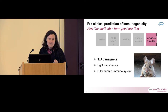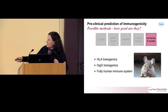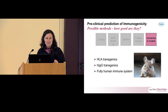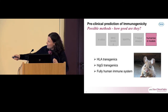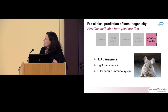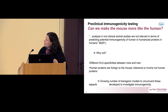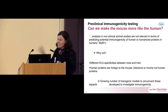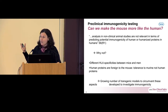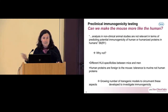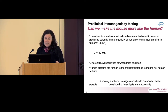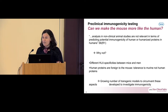Now I'm going to take a slightly different tack and move on to looking at humanised animals. There are three different types of humanised animals that are mostly used: the HLA transgenics, human IgG transgenics — because I'm looking from a Roche perspective and we make monoclonal antibodies — and the fully human immune system, which Tim touched on before. The real question is, can we make the mouse more like the human? Our regulatory guidance always tells us that non-clinical animal studies are not relevant in the prediction of immunogenicity — because we have different HLA specificities between mice and men, and a human protein is always going to be foreign to the mouse, as all of our tolerance mechanisms are to murine rather than to human proteins.